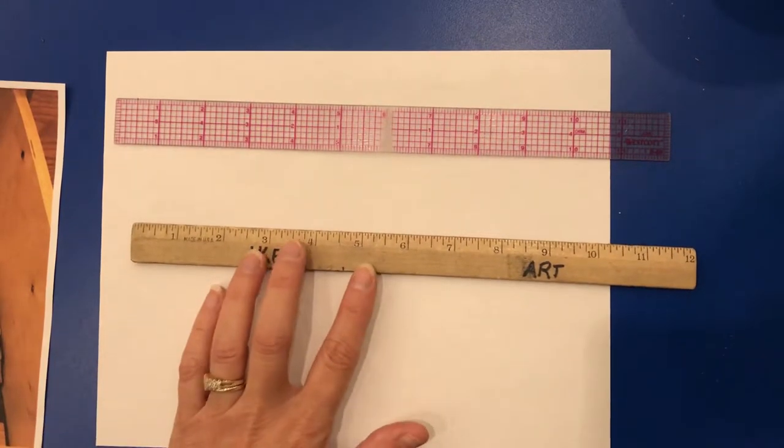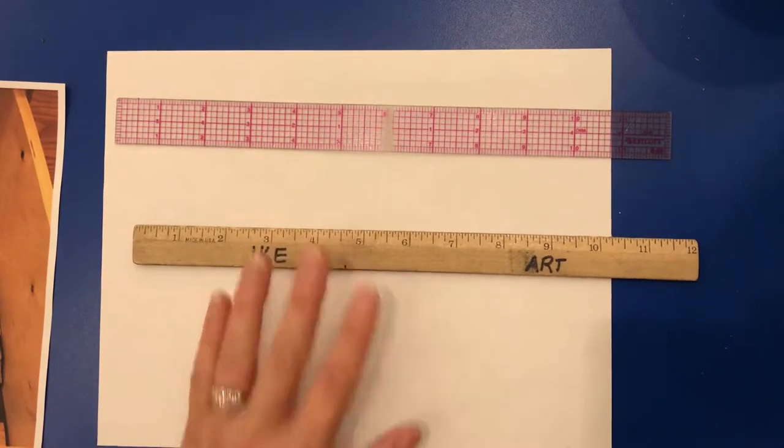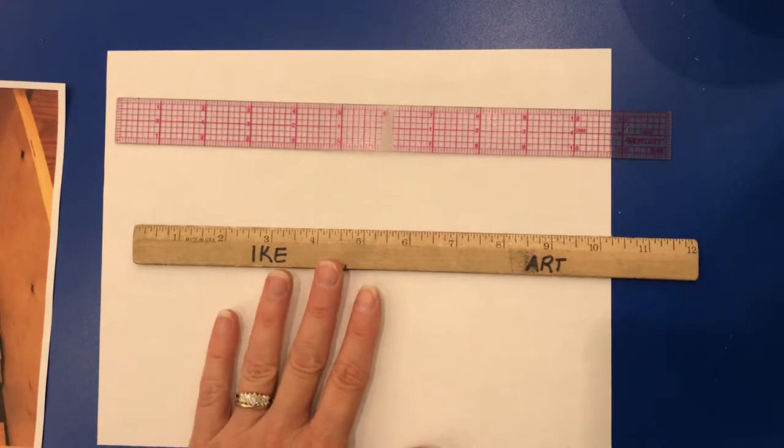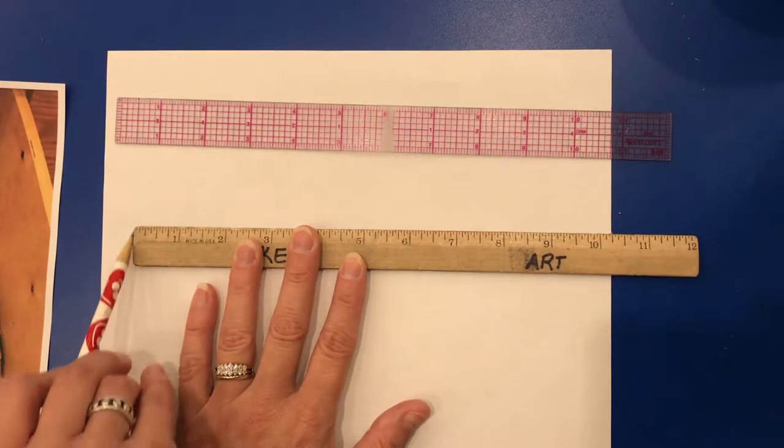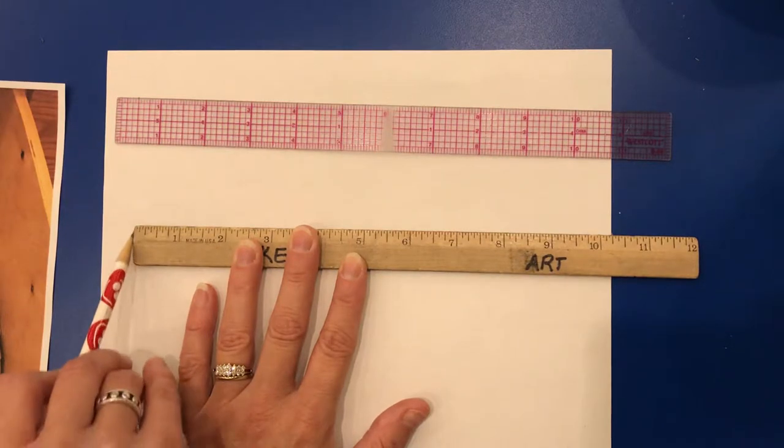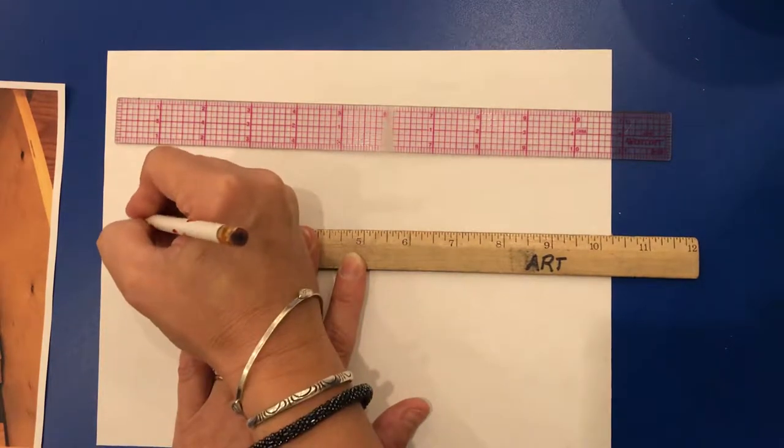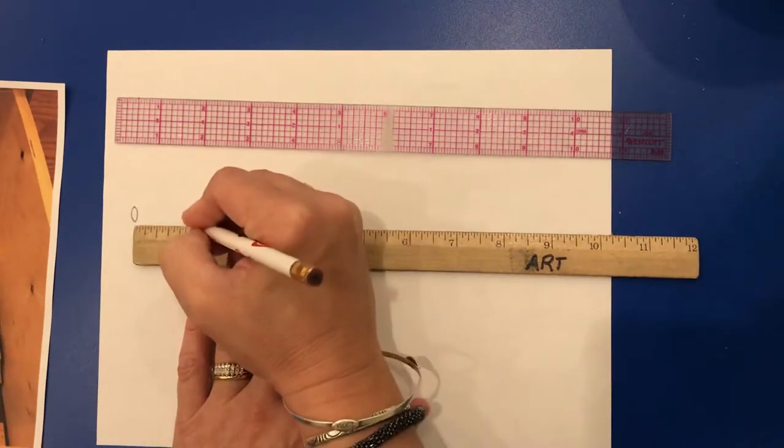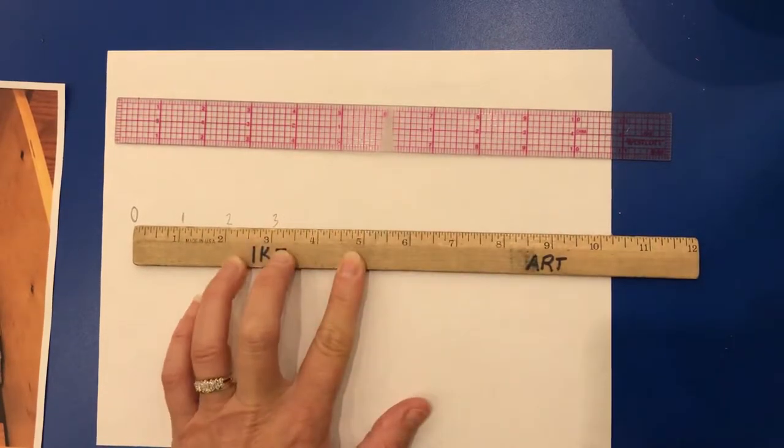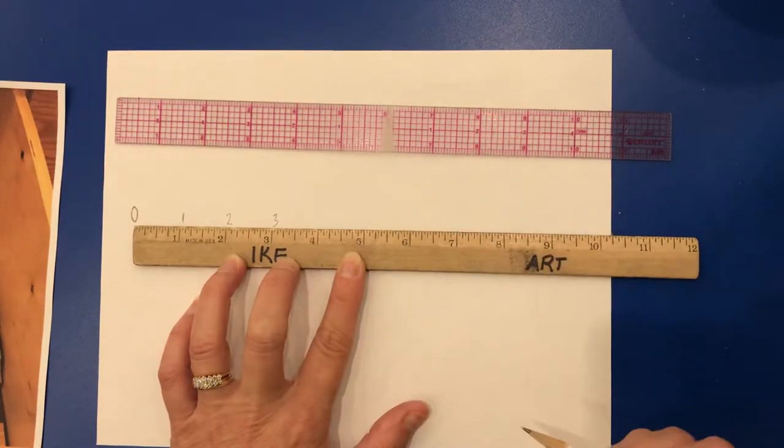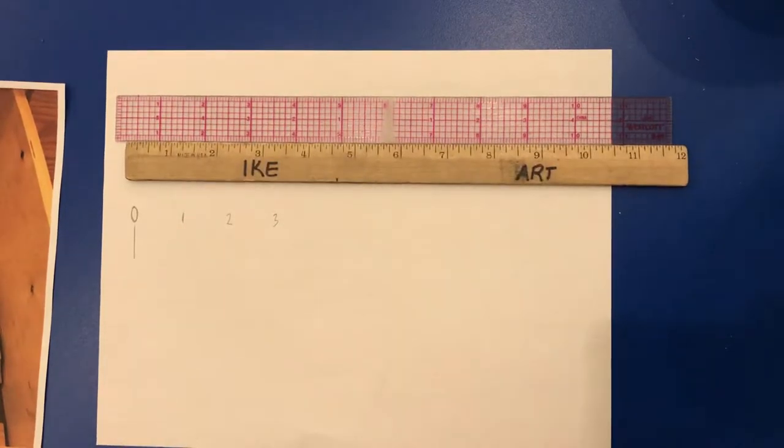Now what I want you to notice about this particular ruler, and almost all rulers do this, is that a lot of times rulers will start at the edge over here. And when you're at the edge of the ruler, this is usually zero. And then you have one inch, two inch, and three inch. So the big mark right here, that's the inches.